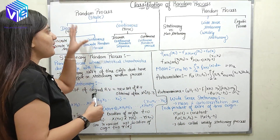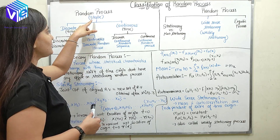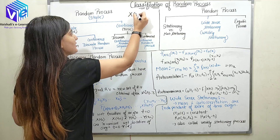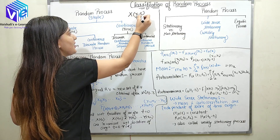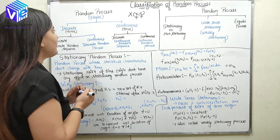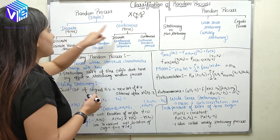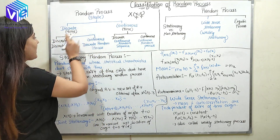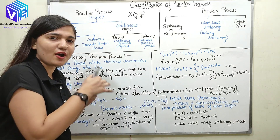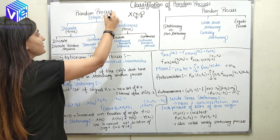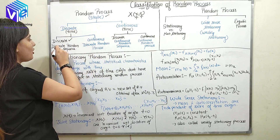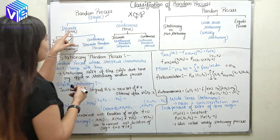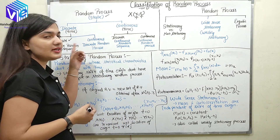The classification is done on two types. The first classification is based on the nature of state and time. The random process is defined as x, where one variable represents the state and the other represents time. If the state is discrete and the time is discrete, then it is called a discrete random sequence. When the state is discrete and the time is continuous, it is called a discrete random process.